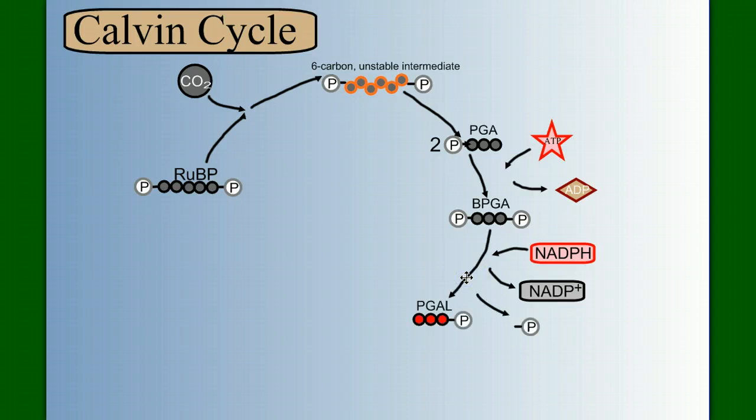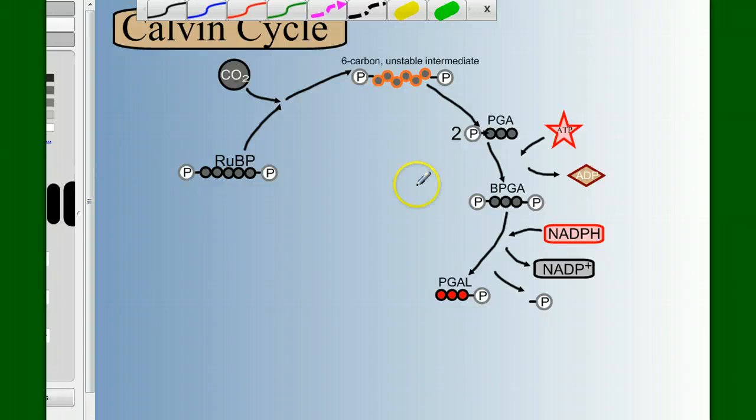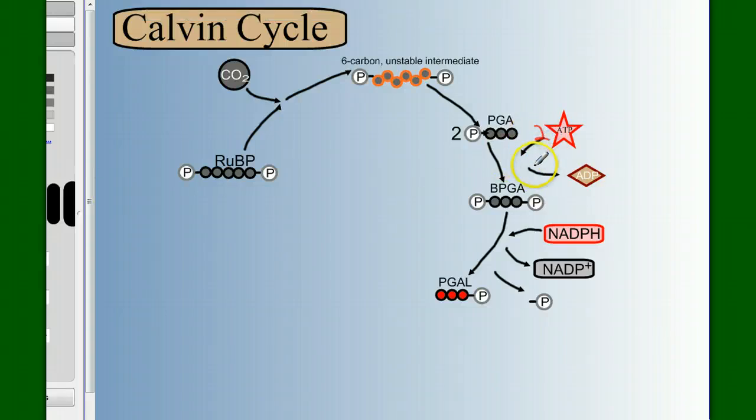Now we need to stop here for a moment and do a little bit of an accounting, because we had two PGAs. So we need two ATP, making two BPGA. We have two ATP. It takes two NADPH. It will make us two NADP plus. And we have two PGAL. So if we're doing an accounting to keep the right numbers, this is what we have right now.